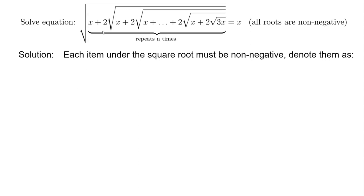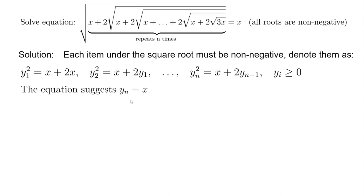So let's do that. Because each item under the square root is non-negative, we denote each one of them as yi. So we have y1 is square root of 3x, which is y1 squared equals 3x equals x plus 2x. And y2 squared equals x plus 2y1, right? So we can write this all the way to yn squared equals x plus 2yn minus 1. Remember, all the yi here are non-negative. Eventually, this equation means we want to solve for yn equals x.